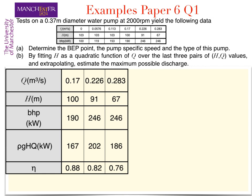We can take our curve for the final three points which are flow rates of 0.17, 0.226 and 0.283 cubic meters per second, with the rest of the data taken from the table we found earlier.